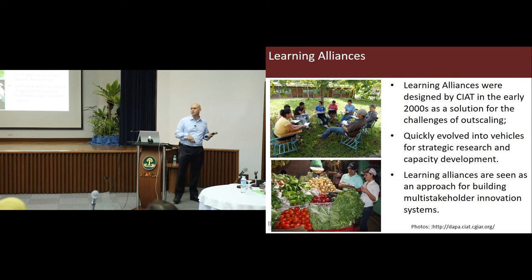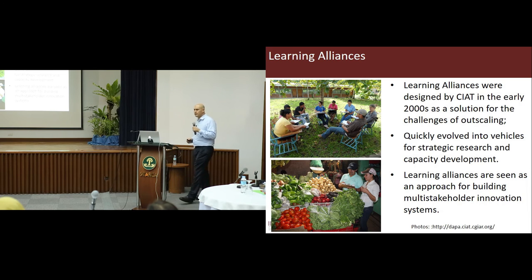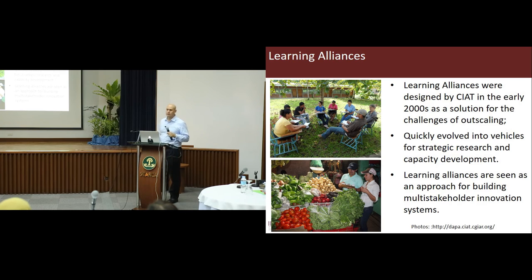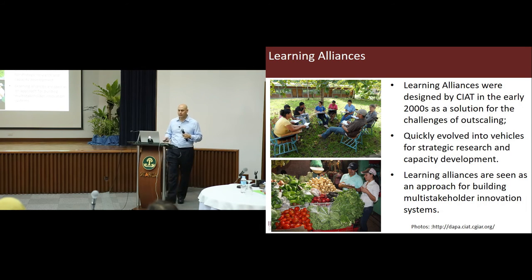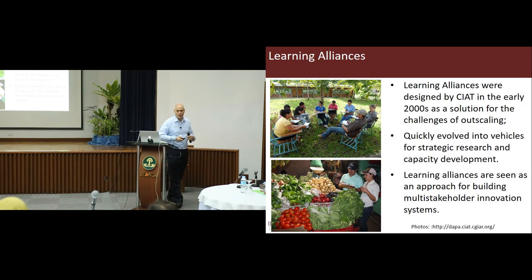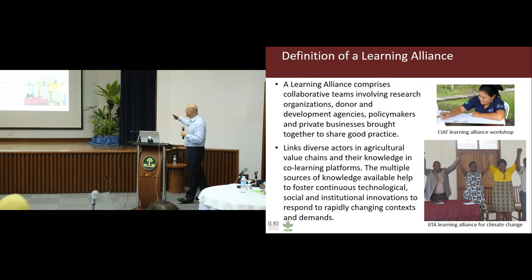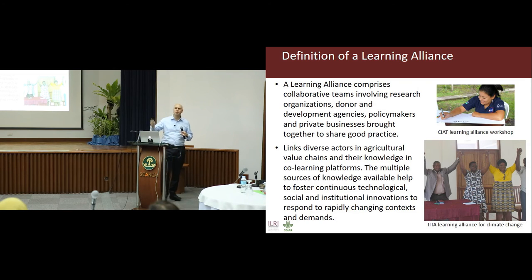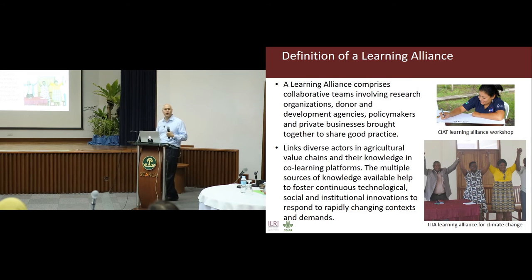Learning alliances were piloted by the Centro Internacional por Agricultura Tropical, or the International Institute for Tropical Agriculture, based in Cali in Colombia in Latin America. Designed in the early 2000s as a solution for challenges of outscaling, they quickly evolved into vehicles for strategic learning and capacity development, and are an approach for building multi-stakeholder innovation systems. The definition — involving research, donors, development, and policy makers bringing together to share good practice — sounds very similar to innovation platforms. They are essentially different names for very similar processes.